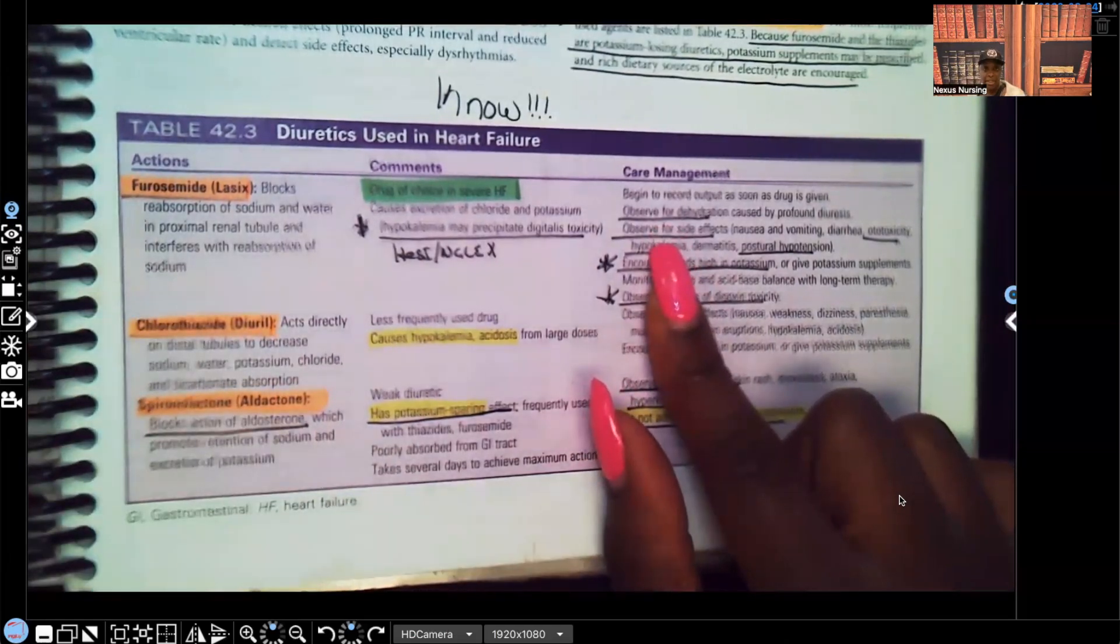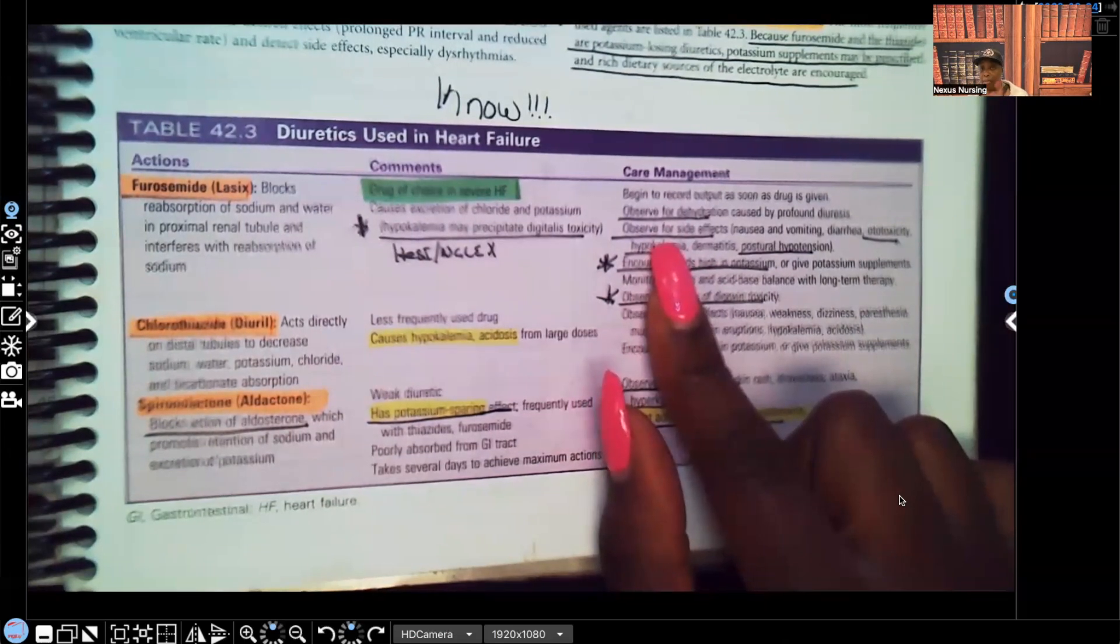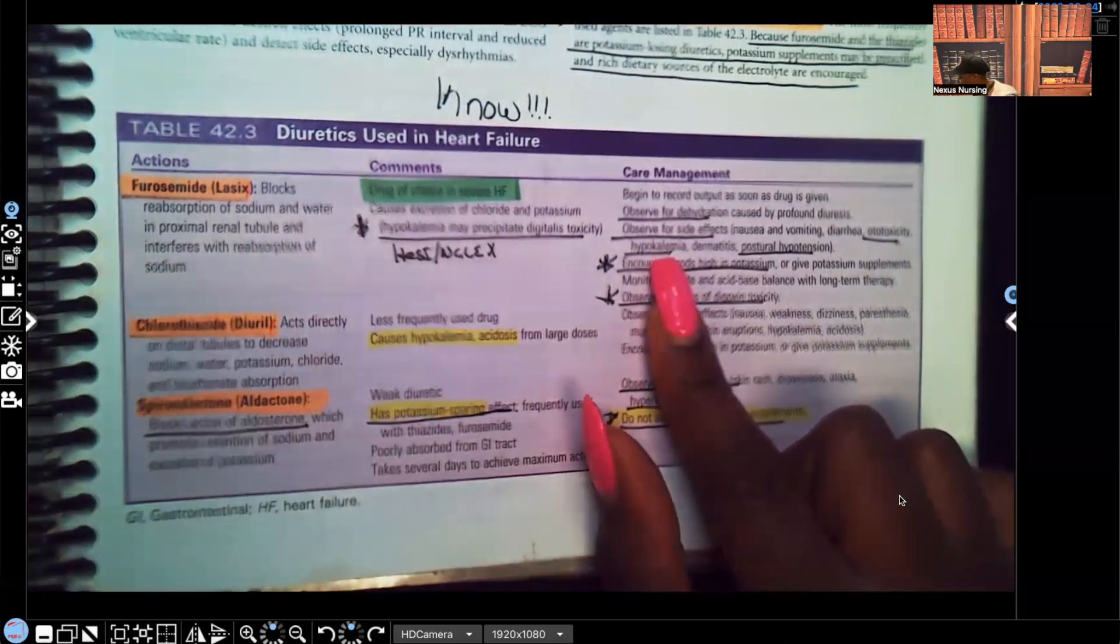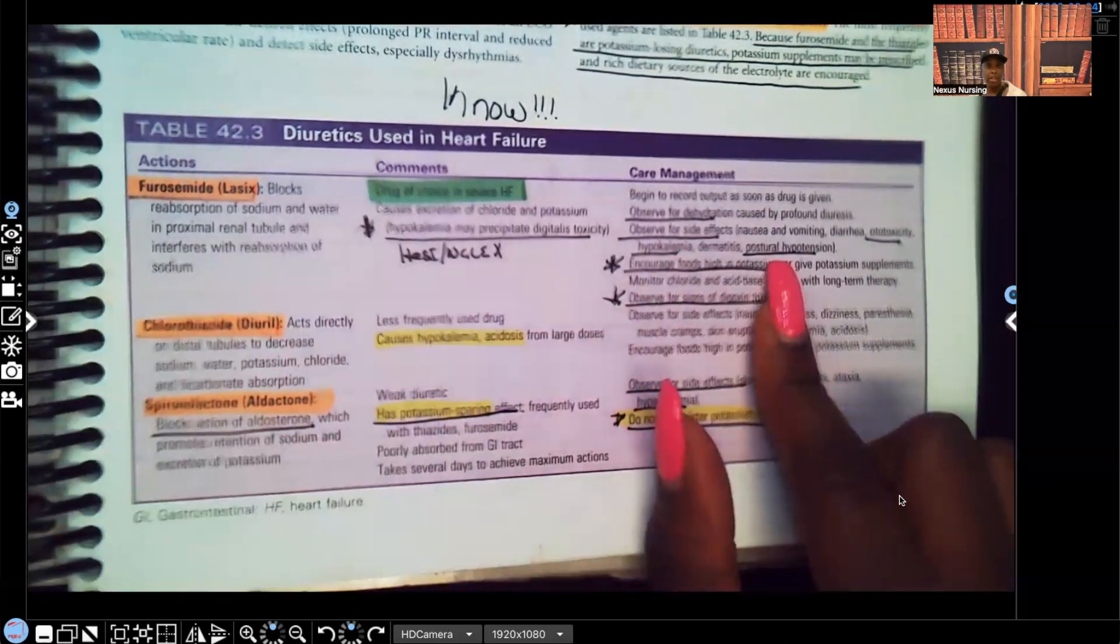What else? Observe for the side effects of the medication such as nausea, vomiting, ototoxicity - patient having decreased hearing, maybe they might hear a ringing in their ears, they might have some tinnitus, hypokalemia. That's a problem. Remember the therapeutic range for potassium 3.5 to 5. And we know that furosemide can drop that potassium and cause hypokalemia, which in turn can cause a whole bunch of other issues. Most importantly, cardiac dysrhythmias, dermatitis, postural hypotension.